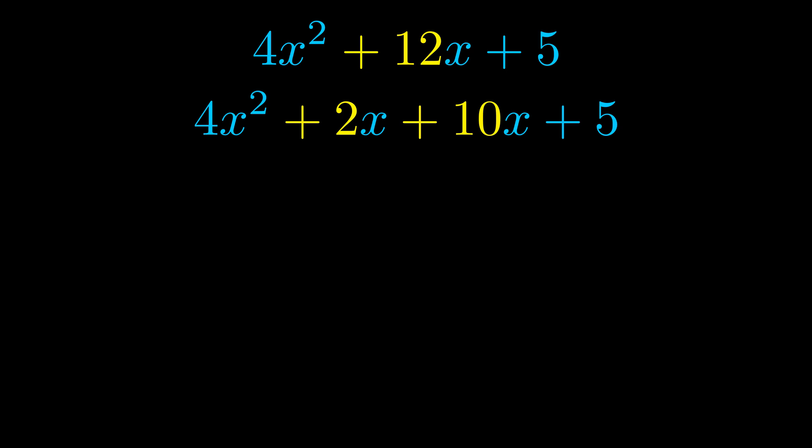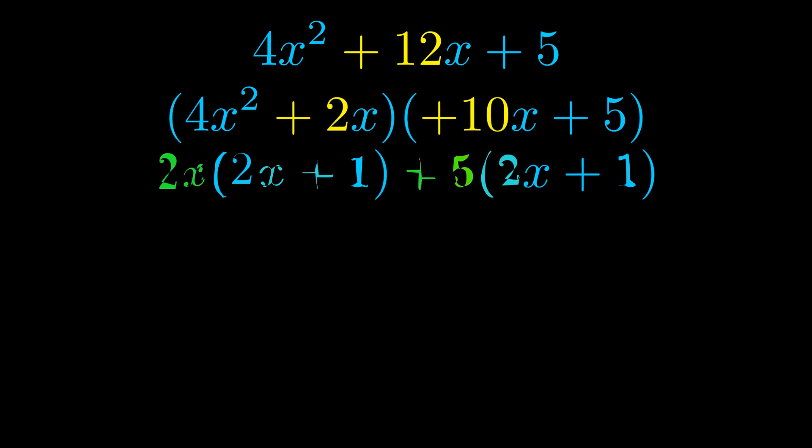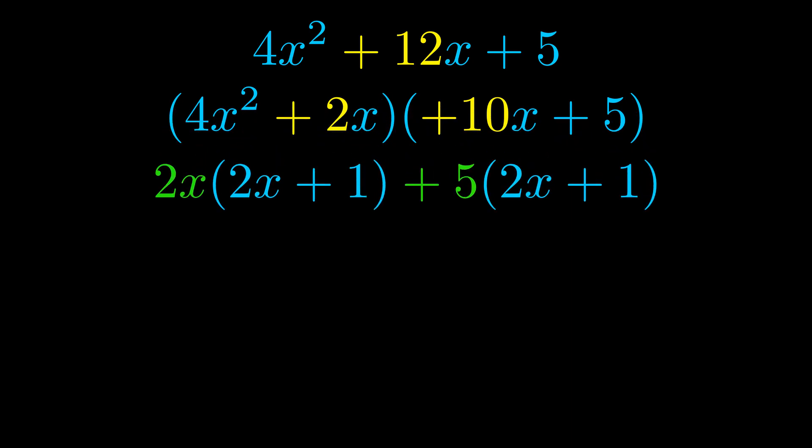Once we've done this we go ahead and we put parentheses around the first term and the last term. And we do that so that we can take the greatest common factor out of both terms. We can see the greatest common factor is now outside in green.